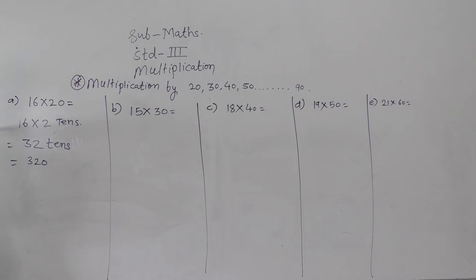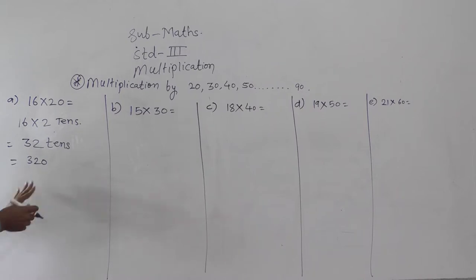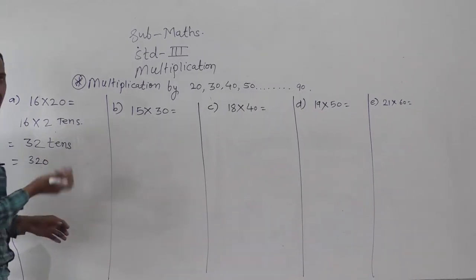If you do not know the table of 16, then you can do the multiplication 16 into 2 like this. 2 sixes are 12, 2 right here, 1 carry. 2 ones are 2, 2 plus 1, 3. So 320 is the answer. So like this you can solve.